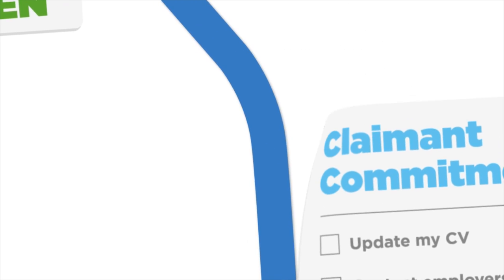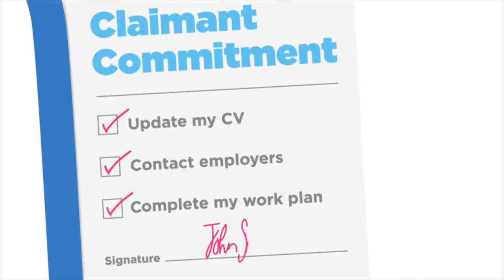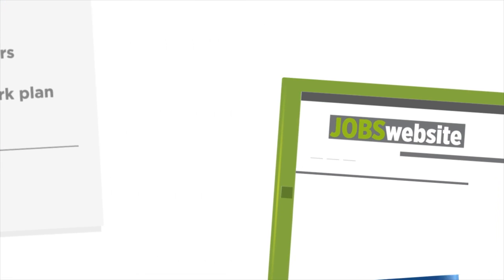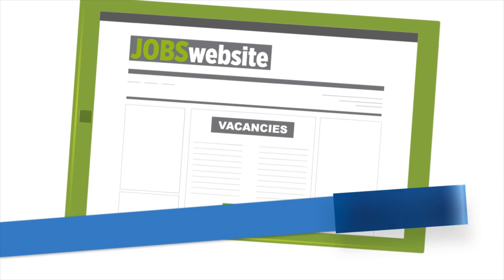To get Universal Credit you'll need to accept a claimant commitment that sets out the steps you'll take to find a job. And if you're able to work you'll be expected to look for work on a full-time basis.